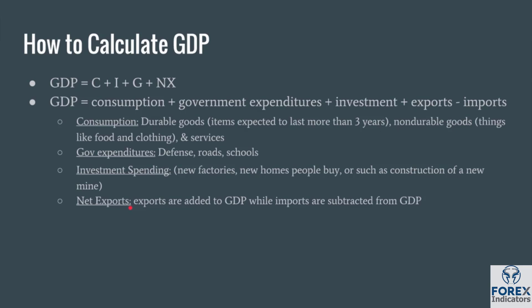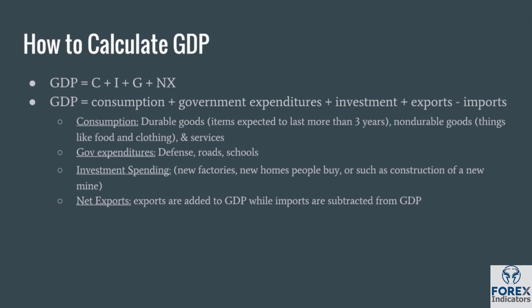Lastly, net exports. Exports are added to GDP while imports are subtracted from GDP. This is because while exports may not be sold in the U.S., they are still produced in the U.S. and therefore are included in GDP. Imports, on the other hand, are not produced in the U.S. — while they are sold in the U.S., because they are ultimately produced outside of the U.S., they are not included in the overall GDP number.